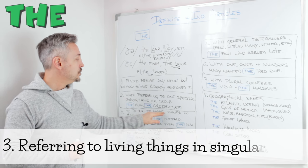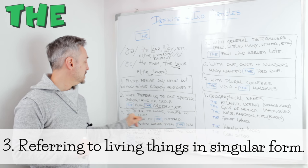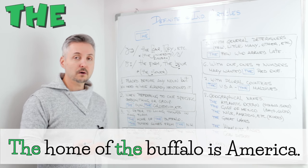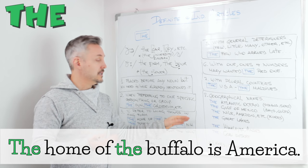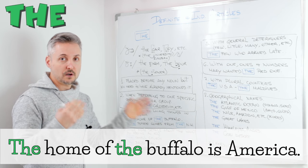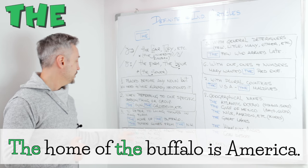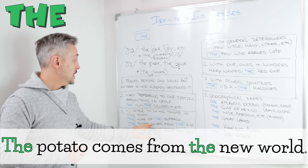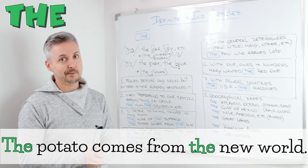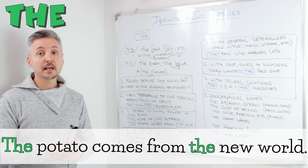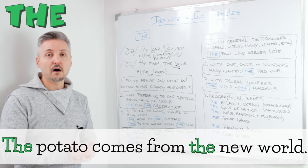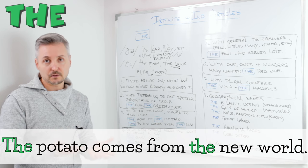Number three: to refer to living things in singular form. 'The home of the buffalo is America.' So the group of animals — buffalo. 'The potato comes from the New World', for example. Potato is singular, but here we mean the group of potatoes.